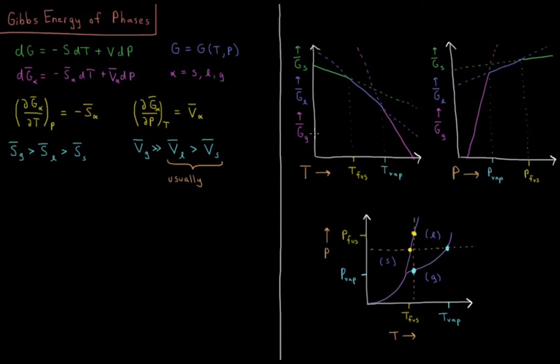So these are some of the ideas which govern the shape of our phase diagram, all determined by the derivatives of the Gibbs energy of that phase versus temperature and pressure relating to the relative values of the molar entropy and the molar volume of the various phases.